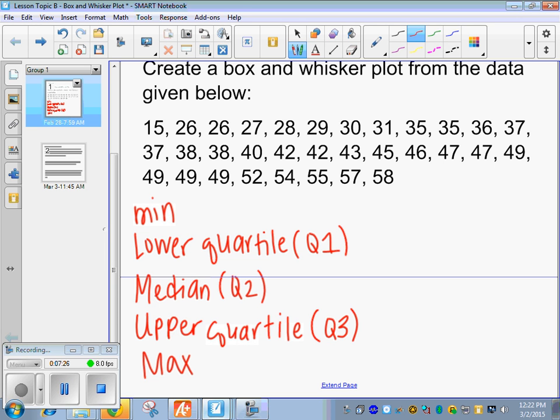Alright, so those are the five things we're going to find and then we're going to draw a box and whisker graph. So, the min. Raise your hand if you can tell me the min. Josh B. Fifteen. Okay. That's easy. That's the smallest number. Raise your hand if you can tell me the max. Monica. Fifty-eight. Good.